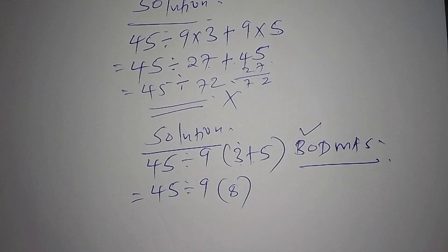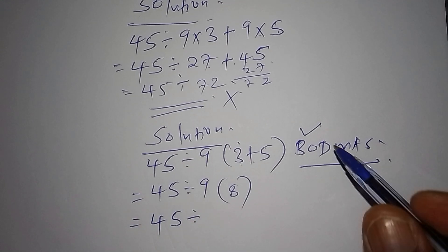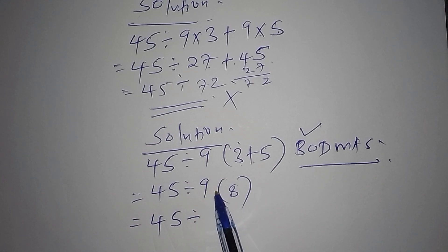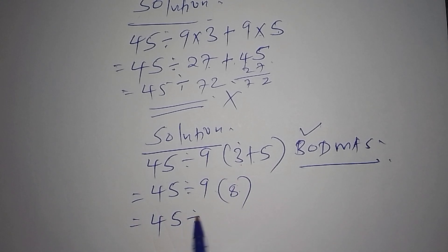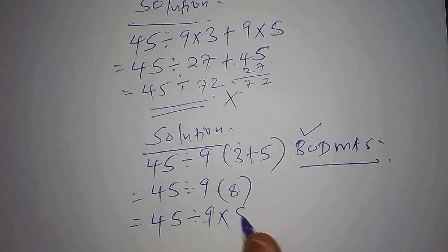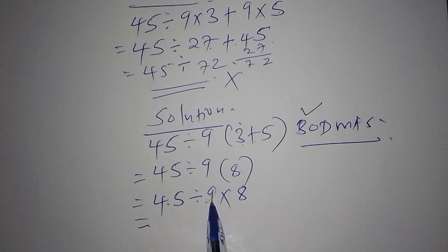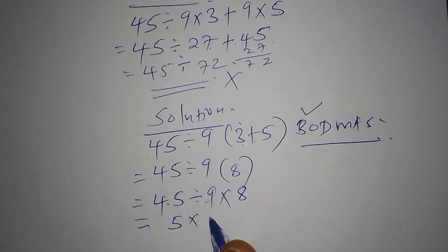The next step is to take 45 and divide by 9, then open the bracket — that is 9 multiplied by 8. So it becomes 45 divided by 9 multiplied by 8. Now 45 divided by 9 equals 5, then finally multiply by 8.